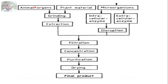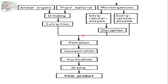If you select the animal cell as a source, note that the cell wall is absent in animal cells, so it is easier to isolate enzymes from them. The next step is cell disruption, done by grinding, enzymatic method, or chemical method. For microorganisms, you must determine whether the enzymes are intracellular or extracellular. After homogenization — by physical, chemical, or biological (enzymatic) method — you proceed to filtration.